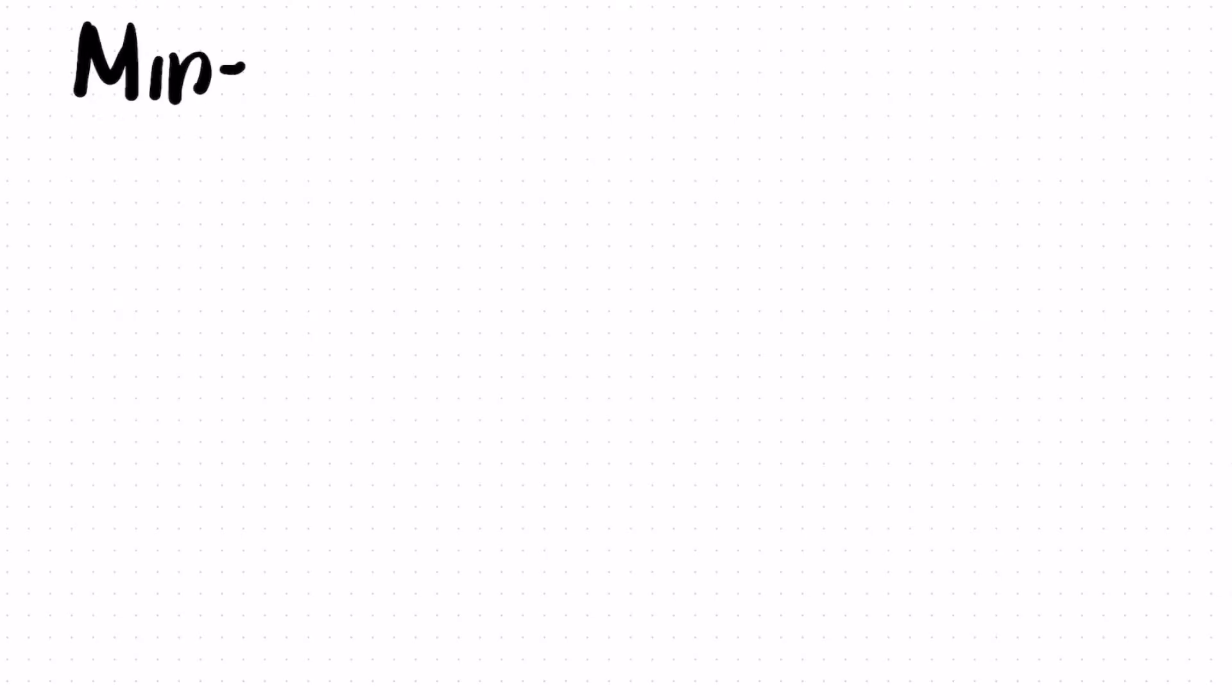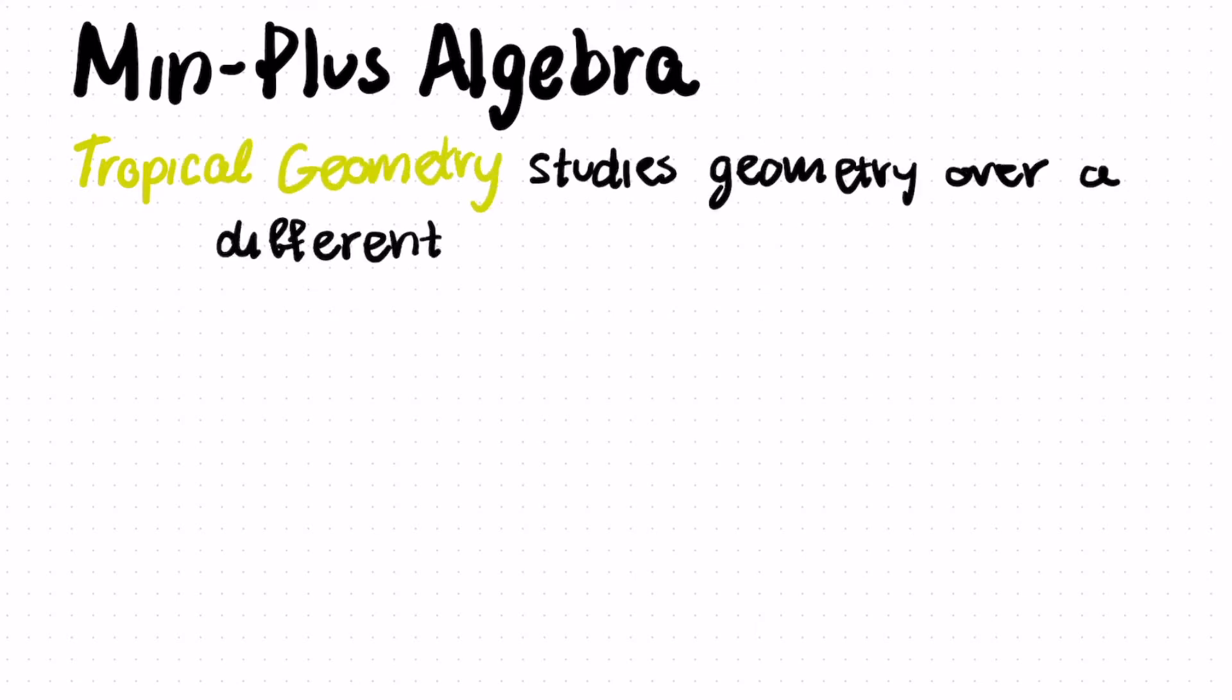So this is just an example of how you can take a function and from it get a shape. OK, so that's a little bit about classical algebraic geometry. But what are we doing in tropical geometry? So we're going to study shapes that are defined over a different algebra. What the heck do I mean by that?